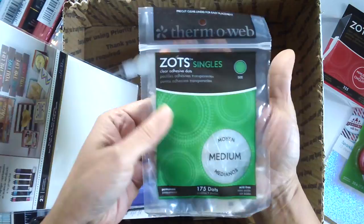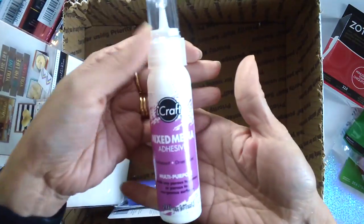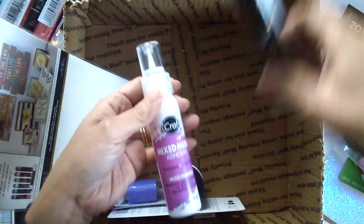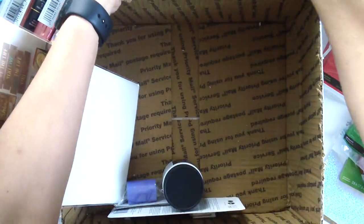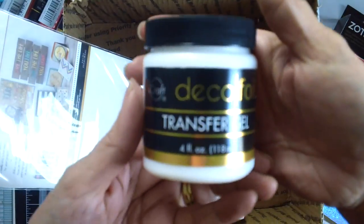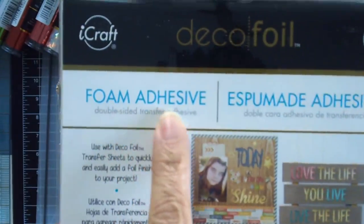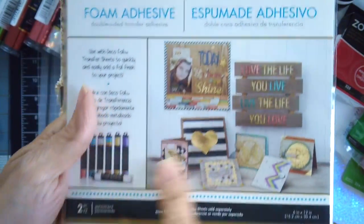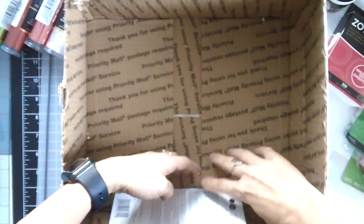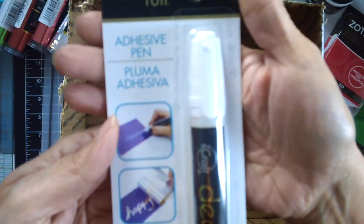The EC tear tape, another Zot singles glue dots and the iCraft mixed media adhesive and then we have also received the transfer gel which I will be using in a different project and this purple tape is incredible and I have used them today and I can't wait to share them with you. It is so amazing and I can't wait to order more.